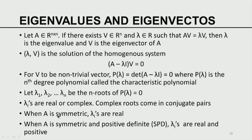The first topic in that direction is the notion of eigenvalues and eigenvectors of any real matrix. Let A be an n by n real matrix. If there exists a vector v belonging to R^n and a constant lambda — a real or complex constant — such that Av is equal to lambda v, then lambda is called the eigenvalue and v is called the eigenvector of A.